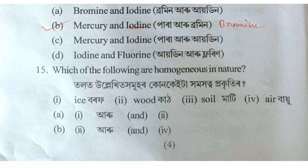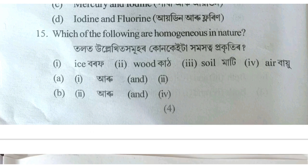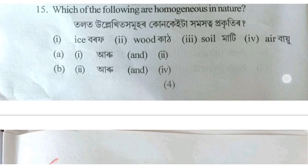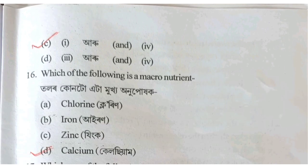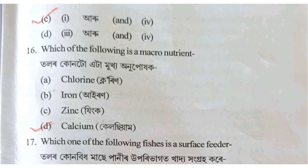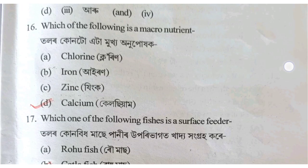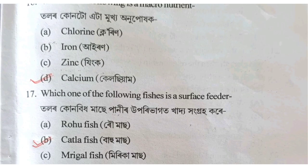Which of the following is a homogeneous mixture? Option C is the answer. Option D is calcium.